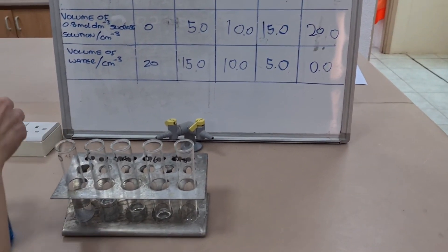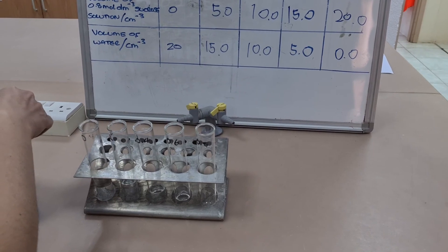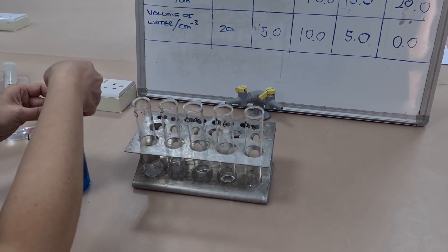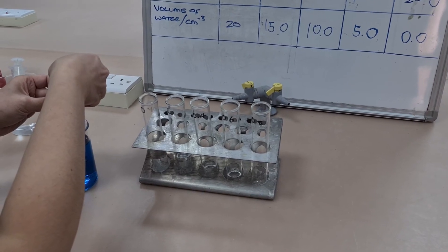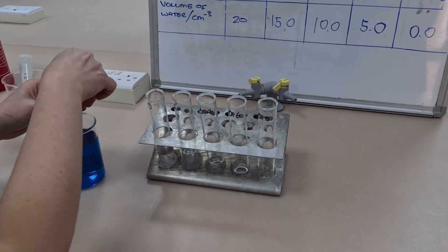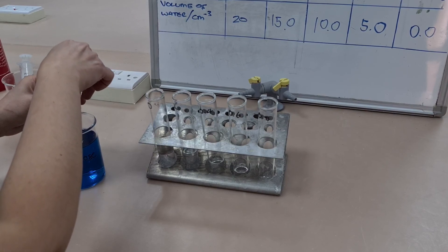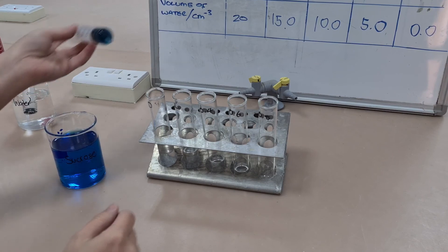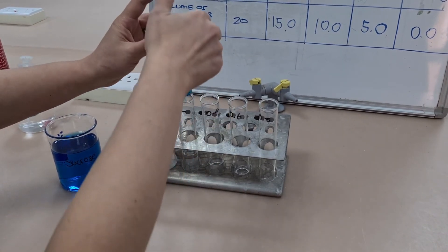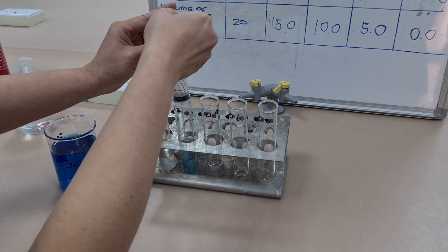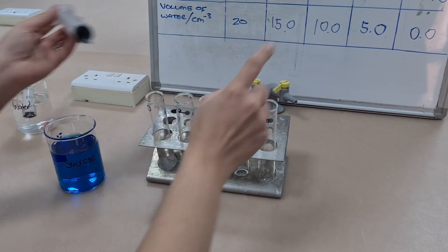Now we switch to our stock solution. We use our table to know how much to add to each tube. Of course, the first tube we don't have to add any of our stock solution to because it's 0 moles per decimeter concentration. So our first one is 0.2 moles per decimeter cubed. And we just added 5 cubic centimeters. Moving on to 0.4, we're going to add 10 cubic centimeters. And so on.